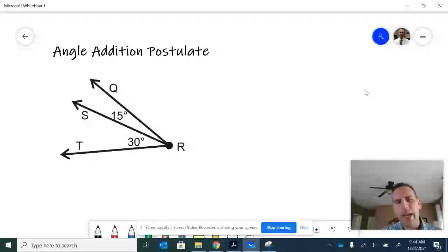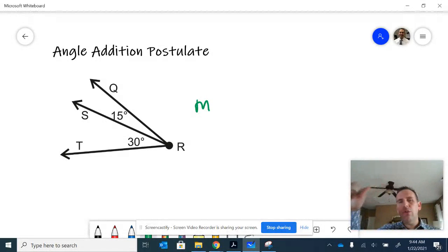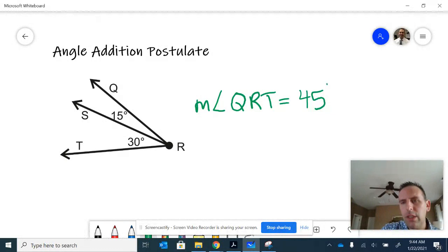And that would mean the measure of the overall larger angle, which I'm going to call QRT, would be equivalent to the sum of those two together: 15 degrees plus 30 degrees equals 45 degrees. That's basically what the angle addition postulate says. When they touch, when they're adjacent or next to each other, you can add those together to come up with the total sum because rays do not really have any dimension.